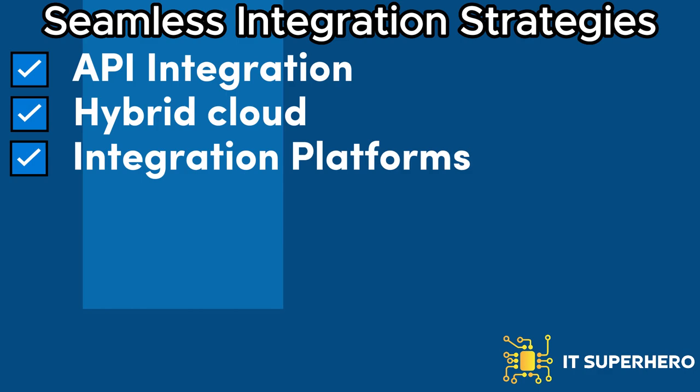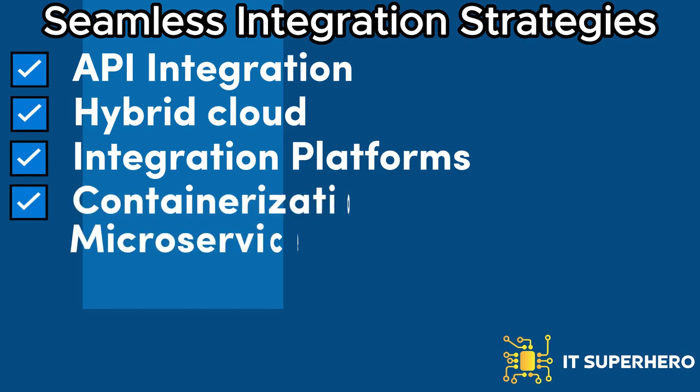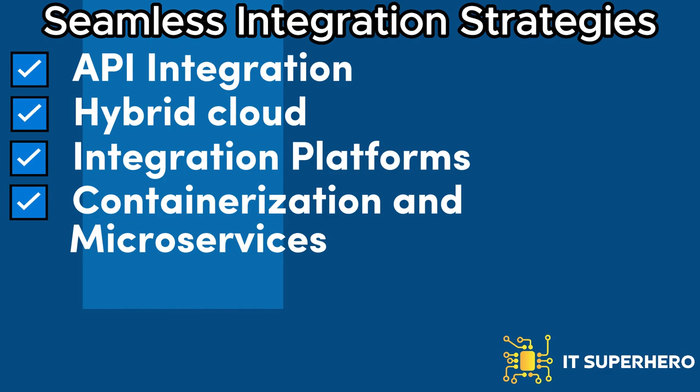Integration platforms such as Integration Platform as a Service (iPaaS) simplify the integration process by providing pre-built connectors, data mapping, and workflow automation capabilities. Containerization and microservices: containerizing applications using technologies like Docker and adopting a microservices architecture facilitates the modular deployment and scalability of applications in both on-premises and cloud environments.